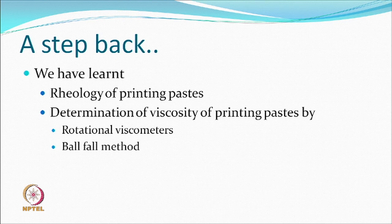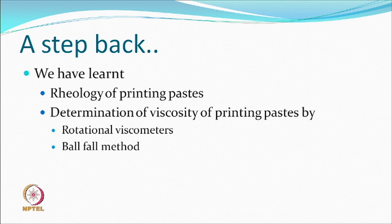We start today with a new topic, but let us first recap what we have done. Last time we talked about the rheology of printing paste, which means they are shear thinning and have a thixotropic property where viscosity reduces with shear but is a reversible process. We also covered some methods of measuring viscosity of printing paste, such as rotational viscometers like Brookfield or the ball fall method, and the principle involved in the ball fall method.